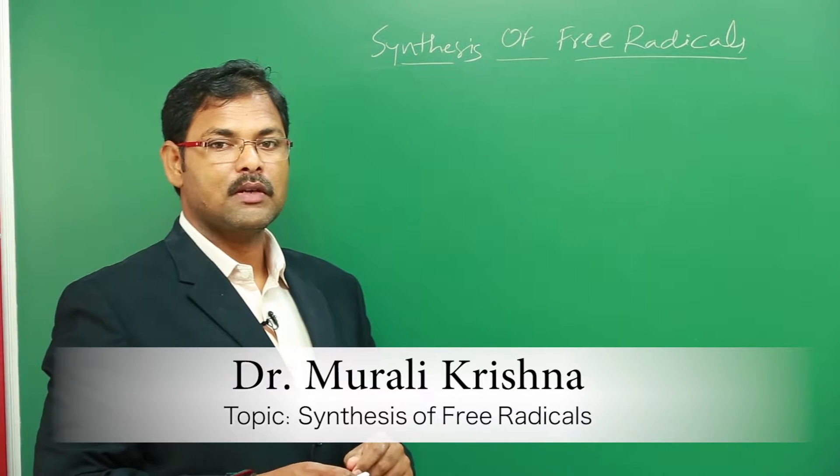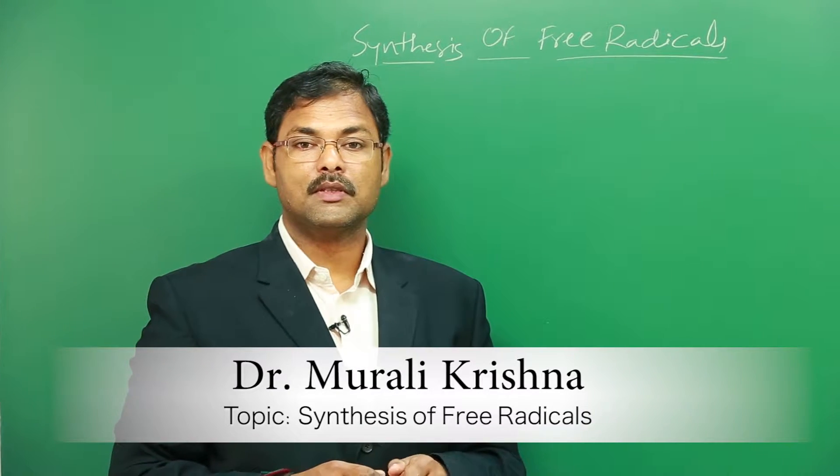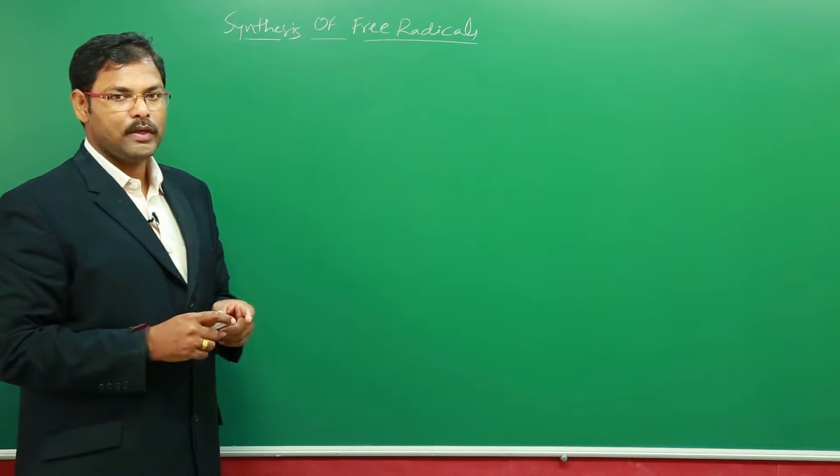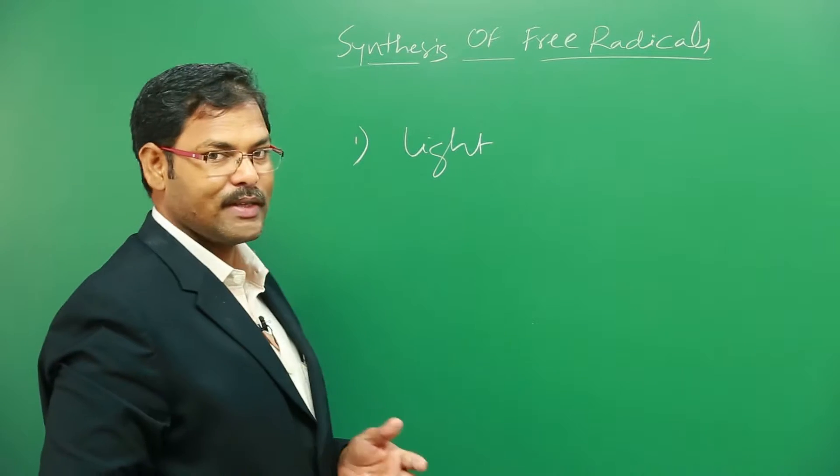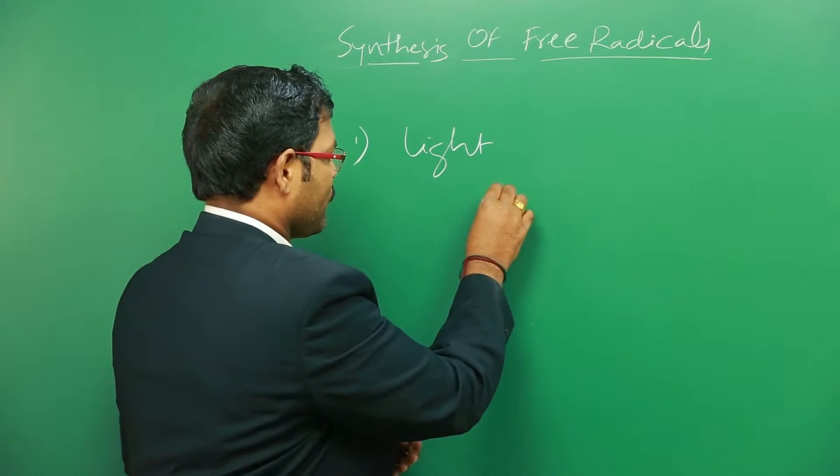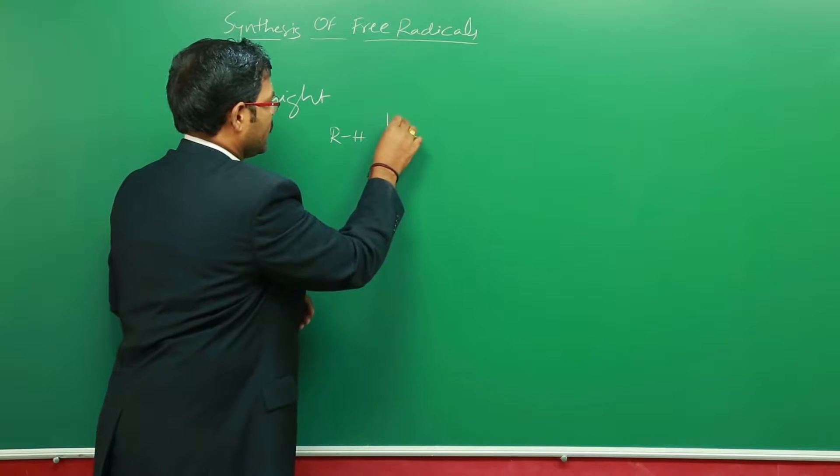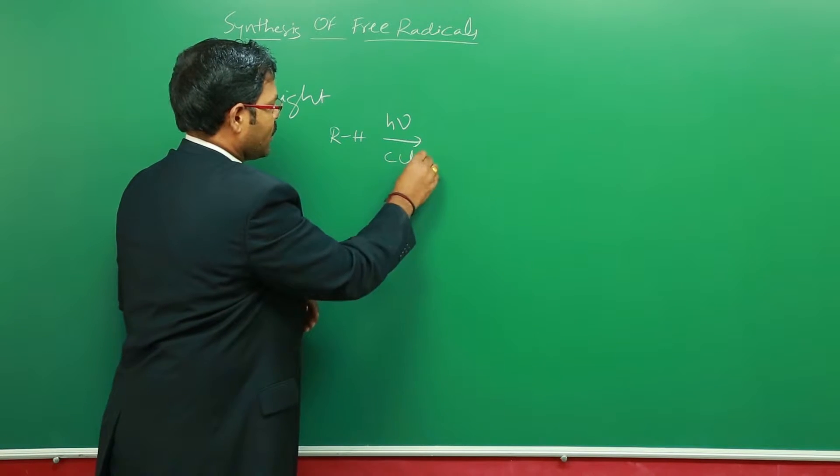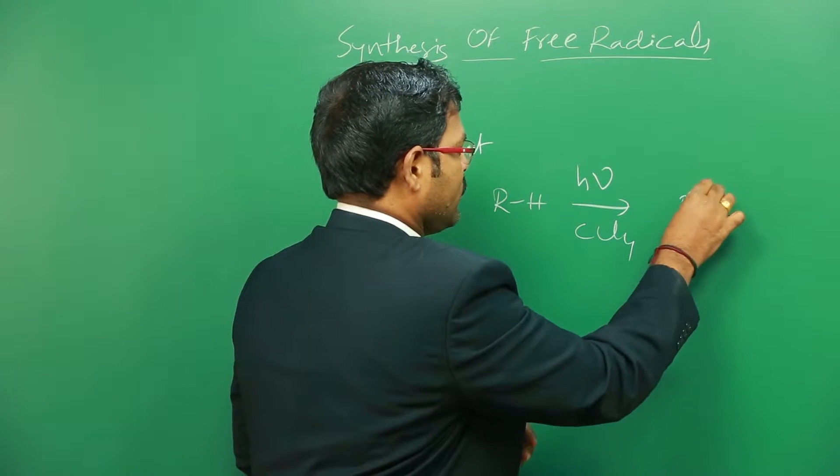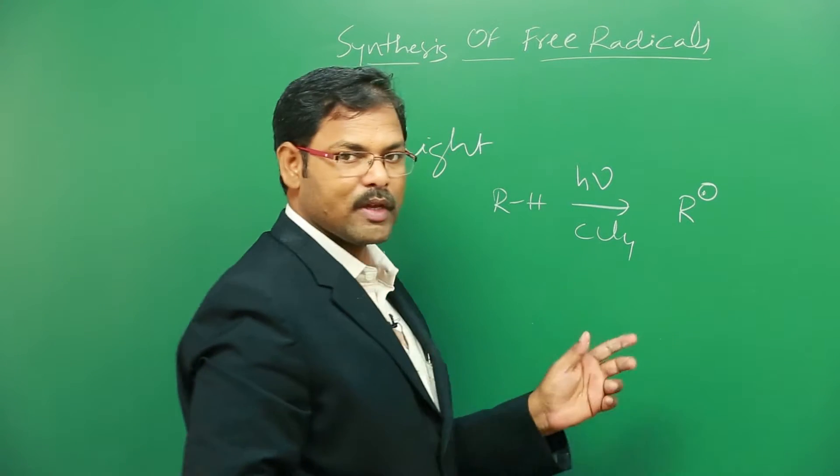Okay, now we'll see how free radicals can be synthesized. Free radical synthesis is done primarily in two ways. One is by using light. When kept in light, usually CCl4 or neutral solvents are used so that it becomes a free radical.